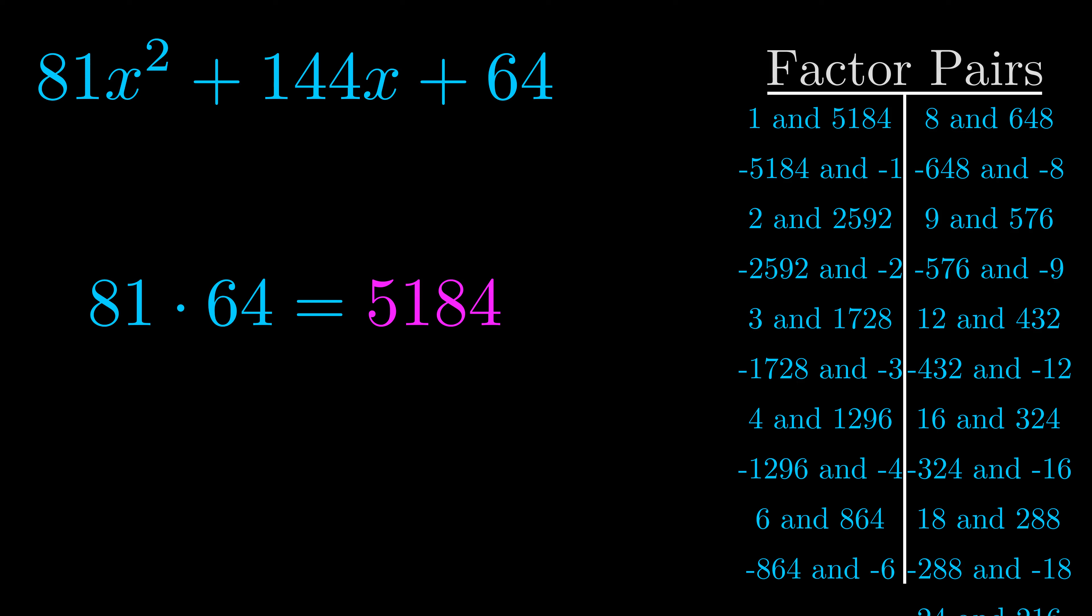The b value is the coefficient on the x term. That's the middle term, the one that we haven't done anything with yet. And really, this is the only factor pair that we need.